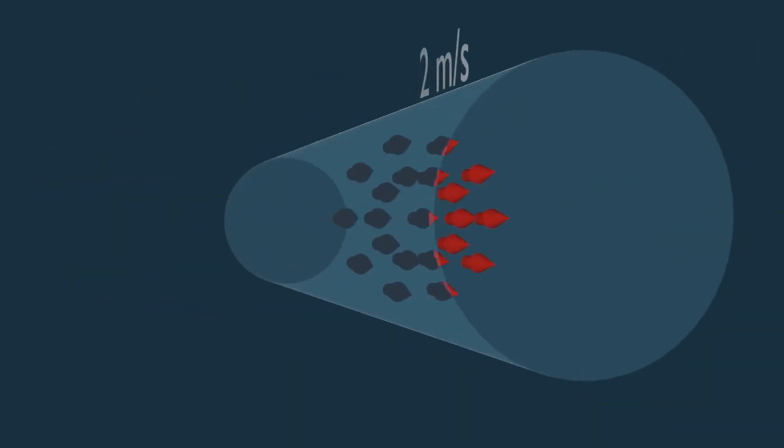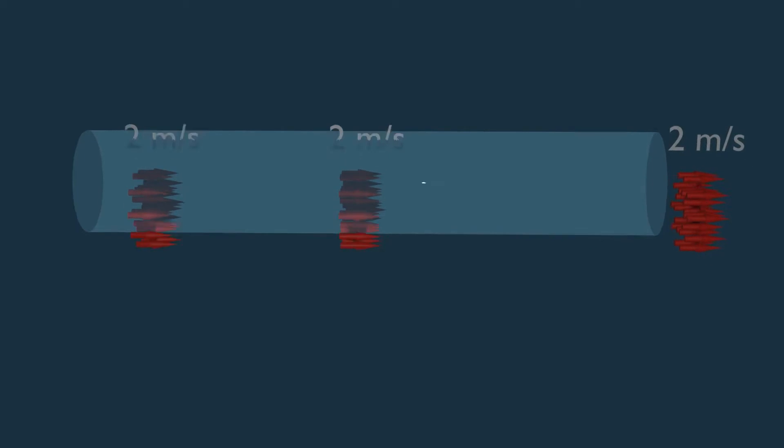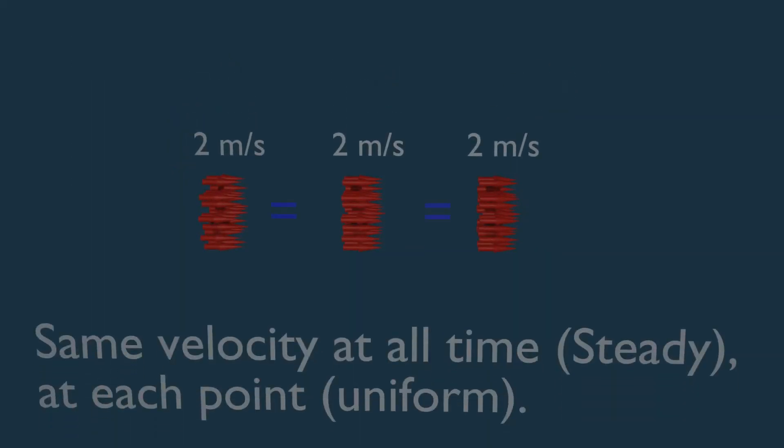The velocity is always 2 meters per second at all times and at all positions. Just remember: 'at all times' makes it steady, and 'at each point' makes it uniform.